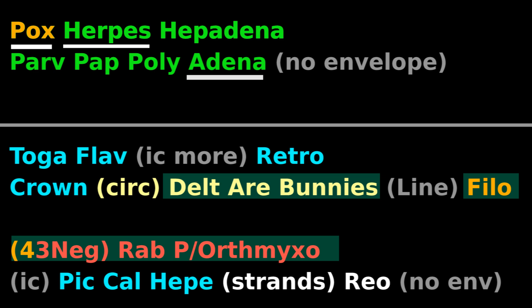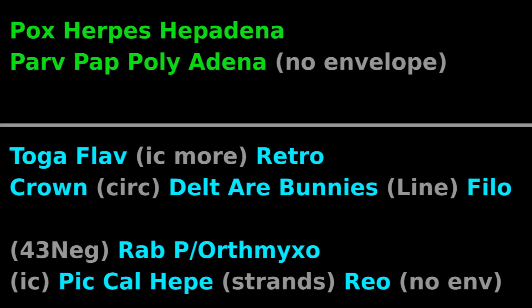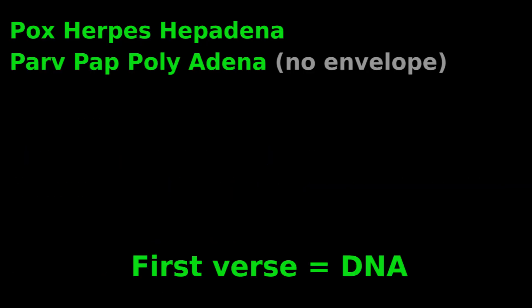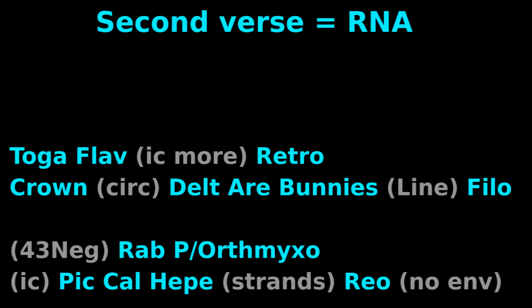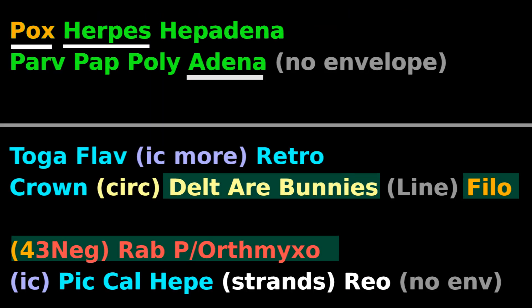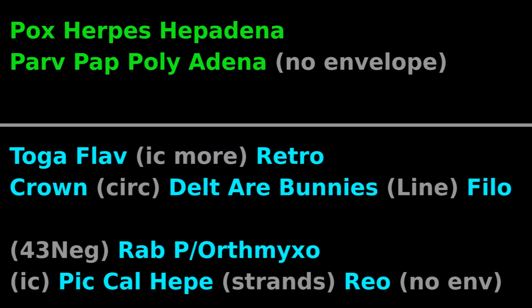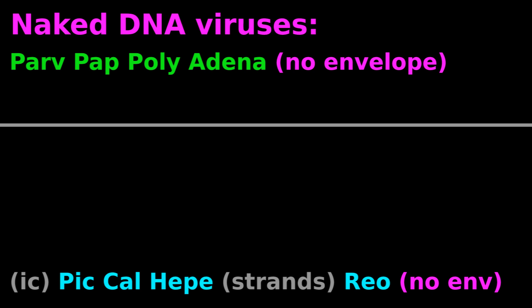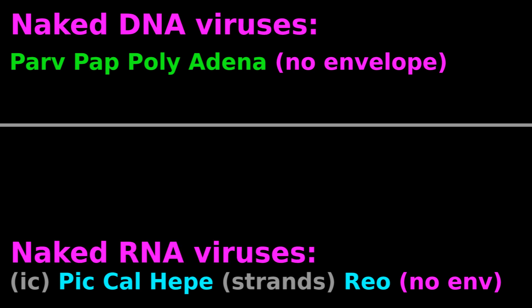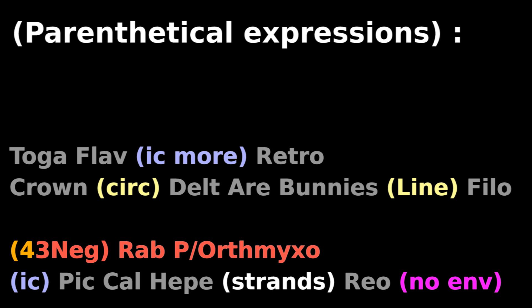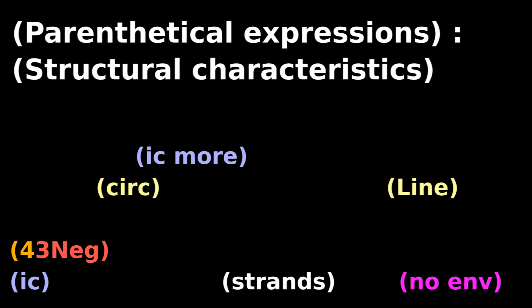Viral structures are almost guaranteed to be on your medical standardized test. If you can sing along with the virus rap, you are not just listing all clinically relevant DNA and RNA viruses, you are also memorizing these viral structures. For example, both verses end with 'No Envelope!' which reminds you that the final lines list the naked DNA and naked RNA viruses.